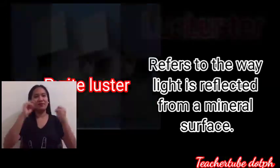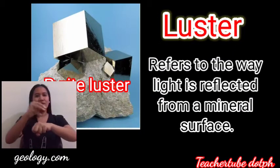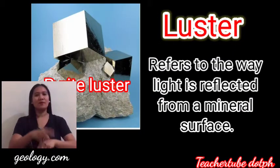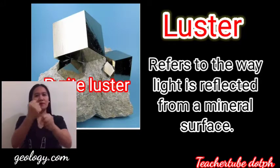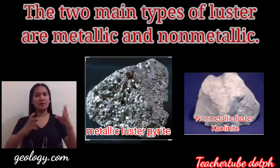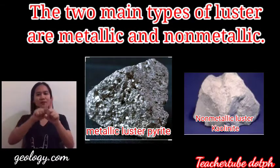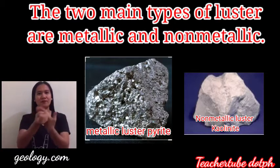We have luster — it refers to the way light is reflected from a mineral surface. An example of this is the pyrite luster. There are two main types of luster: metallic and non-metallic.